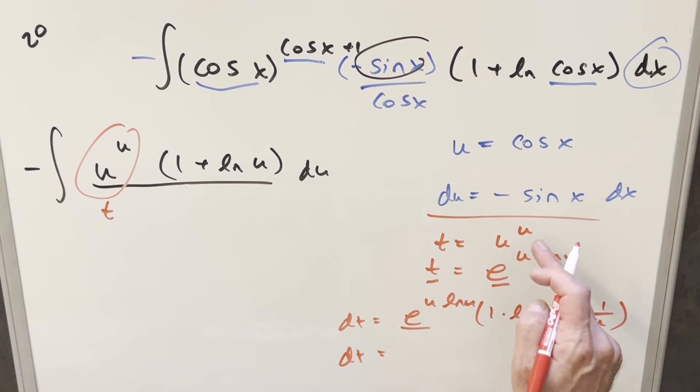Then let's just clean this up a little bit. This right here is equal to t, which is also equal to u to the u. I can just put it back this way and we can write this as u to the u. And then this, u times 1 over u, that's just a 1. Let's just reorder this. So we can write this as 1 plus ln u, du.